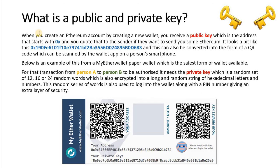What's a public and private key? When you create an Ethereum account by creating a new wallet, you receive a public key, which is your address that starts with 0x. Here's an example of one. This can also be converted into the form of a QR code, which can be scanned by a wallet app on a person's smartphone.